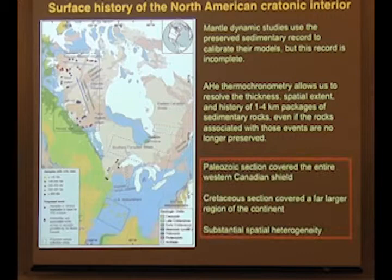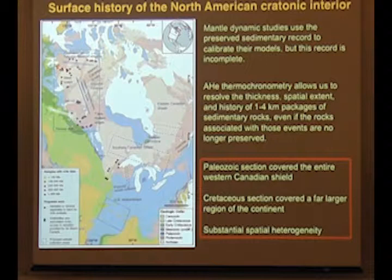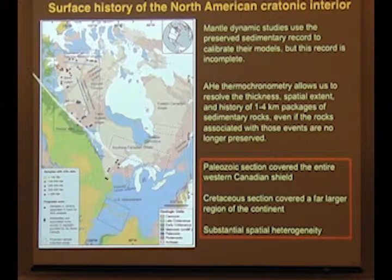Key things we're learning from this dataset: although Precambrian basement is now exposed across the entire interior of the North American continent, we know from this data that Paleozoic units once covered the entire region of the Western Canadian Shield and were later eroded away. We also know that the Cretaceous covered a much larger region of the continent, and that there's substantial spatial heterogeneity in this history. Not only can we figure out the spatial extent of these units, we can figure out how much was there, how spatially heterogeneous it was, and even patterns of erosion of these now-denuded sedimentary packages.